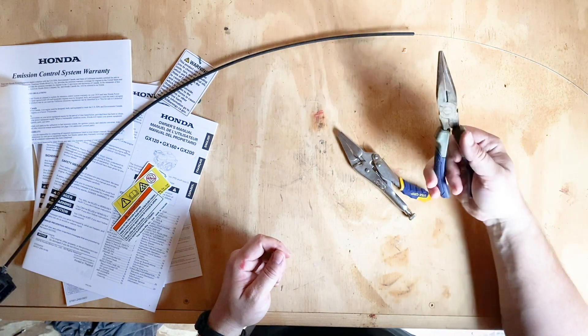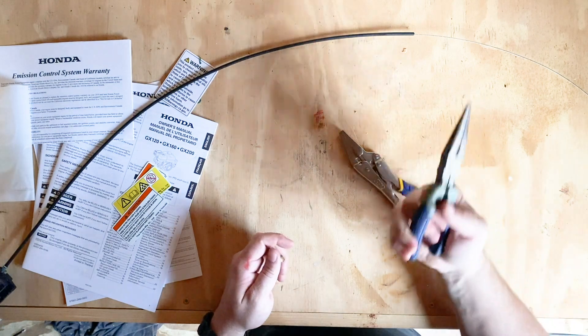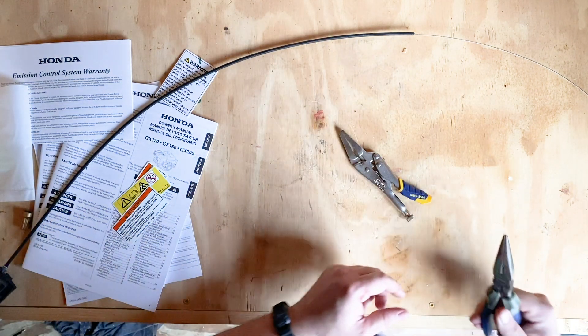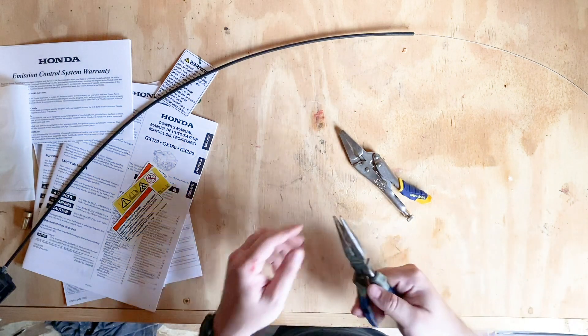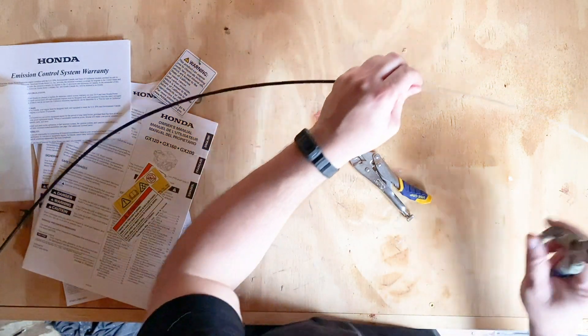If you don't have needle nose pliers or needle nose vice grips, then definitely just use a good set of needle nose pliers. Try not to use the cheapy ones because when you start making your bends they'll get all kind of crooked on you.